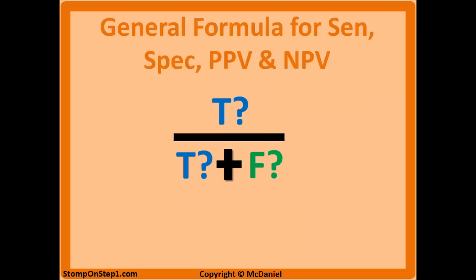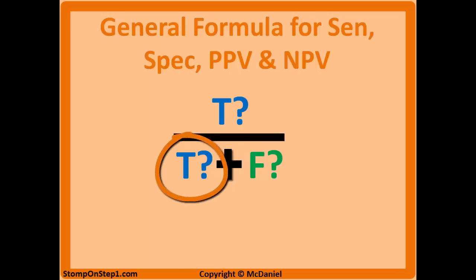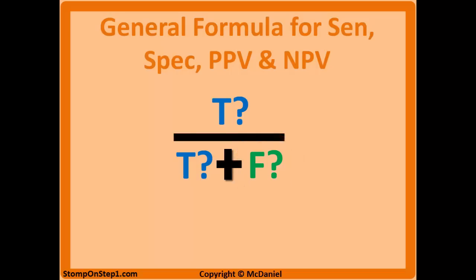One of the reasons keeping these formulas straight is so difficult is because they all sort of look the same. But you can use that to your advantage because it means you have to memorize less. I think about the numerator always being 'true,' the bottom left value always matching that top value, and then the bottom right value always being 'false.' The two blue things always match each other, and the green one is different. For positive and negative predictive value all three question marks are the same, while in sensitivity and specificity the blue question marks are the opposite of the green one.